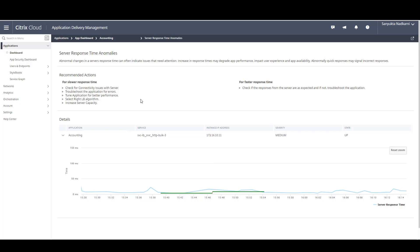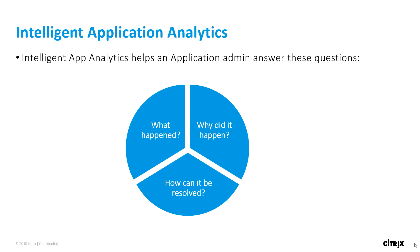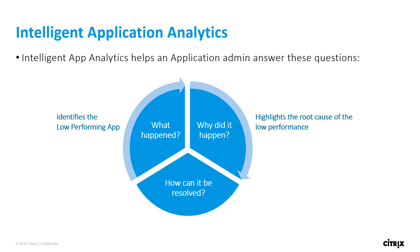This was a quick glimpse on how Intelligent App Analytics helped an app admin identify a server response time anomaly. In general, Intelligent Application Analytics helps an application admin answer three questions: What happened? — it identifies the low performing applications. Why did it happen? — it highlights the root cause of the low performance. And how can it be resolved? — it recommends certain actions to resolve the issue.